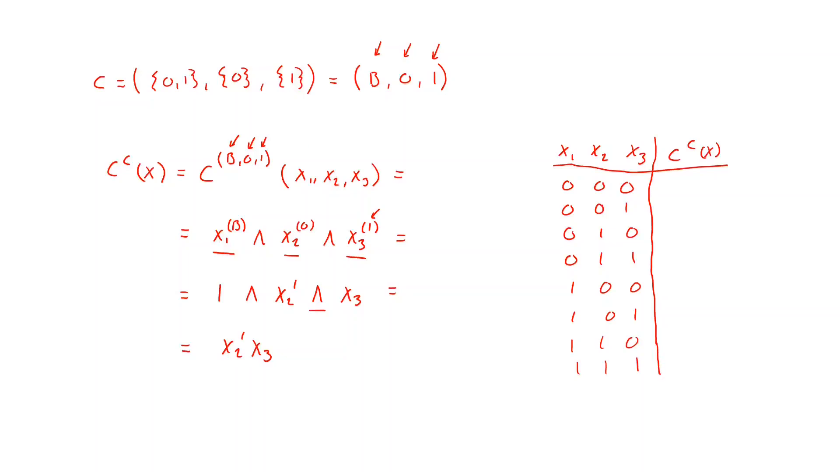And now we can see here that in our first dimension that we have represented with the variable x_1, we have B, which consists of both zeros and ones. So x_1 can be both zero and one. However, x_2 must be a zero and x_3 must be a one. And it doesn't matter what x_1 is because it can be both zero and one. So in this case we have a one here, we have a one here, and we will have a zero in all the other rows of the truth table.